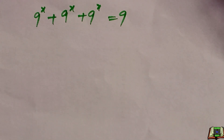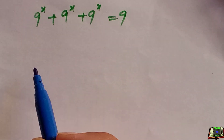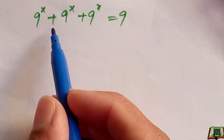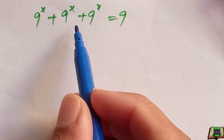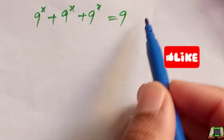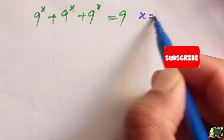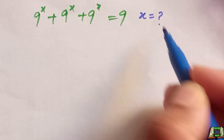Welcome all of you. Today we have this exponential equation: if 9 raised to power x, plus 9 raised to power x, plus 9 raised to power x is equal to 9, then we have to find x.